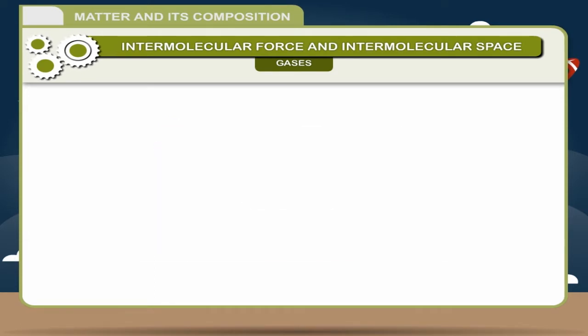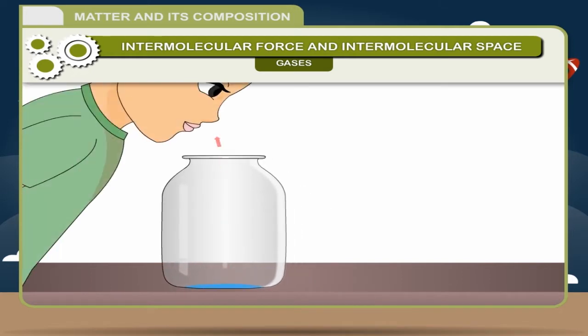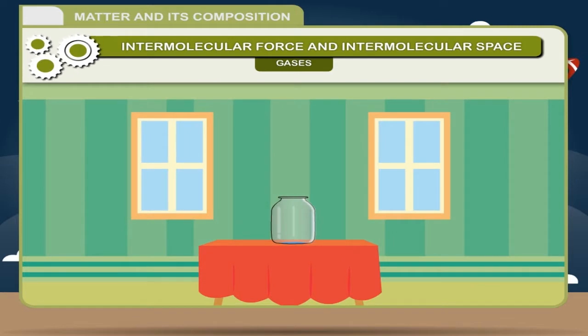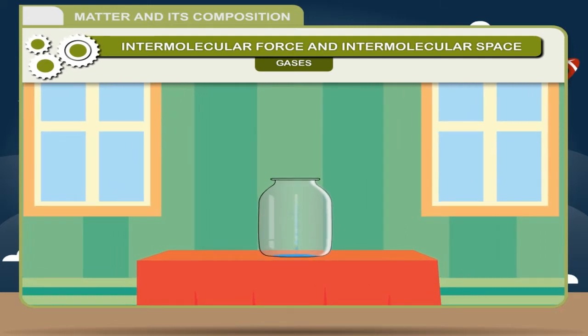Activity: Take an empty glass bottle and pour a few drops of perfume in it. Smell the bottle. You will be able to smell the perfume. Now, place this bottle in your drawing room and leave it undisturbed for a few minutes. You will observe that the whole room is filled with the smell of perfume. From this activity, we conclude that gases have no definite volume. They have a property to fill the entire space available to them.